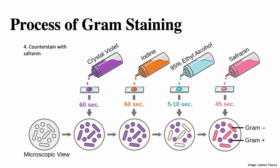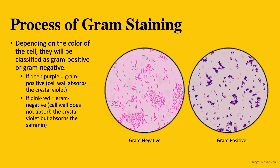Depending on the color of the cell, they will be classified as gram-positive or gram-negative. If the color is deep purple, then the cell is gram-positive. This means that the cell wall absorbed the crystal violet. If the cell is pink-red, then it is gram-negative. This means that the cell did not absorb the crystal violet, but it absorbed the safranin.